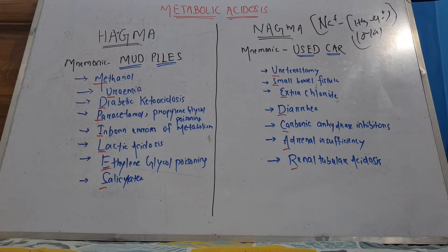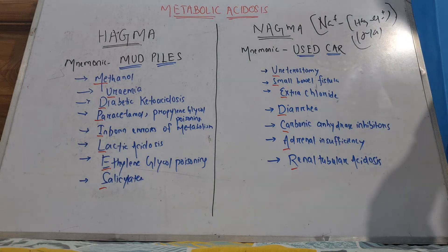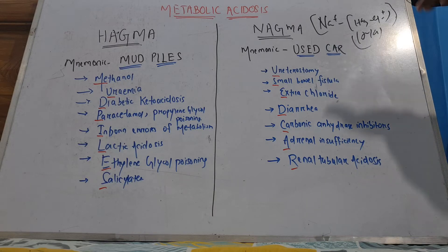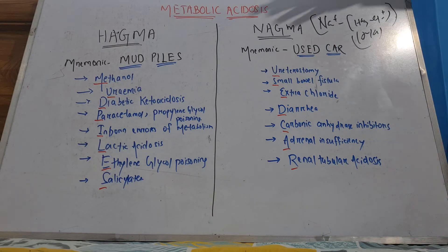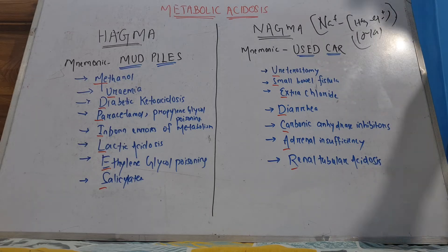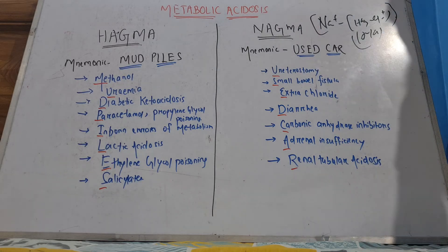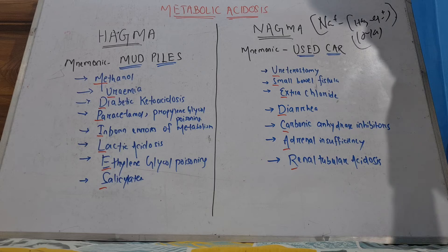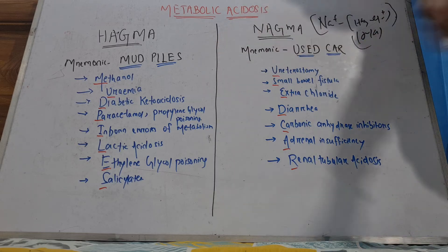High anion gap metabolic acidosis is very high yield. Every year there are 2–3 questions coming from the PG entrance exams. So I thought I will share this very old mnemonic with you — high anion gap: MUD PILES. You have to remember this.